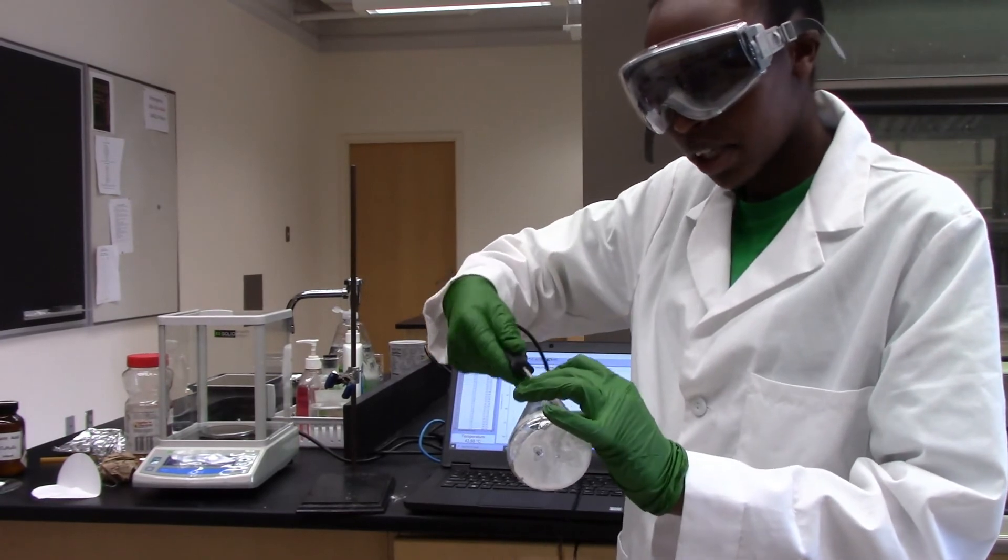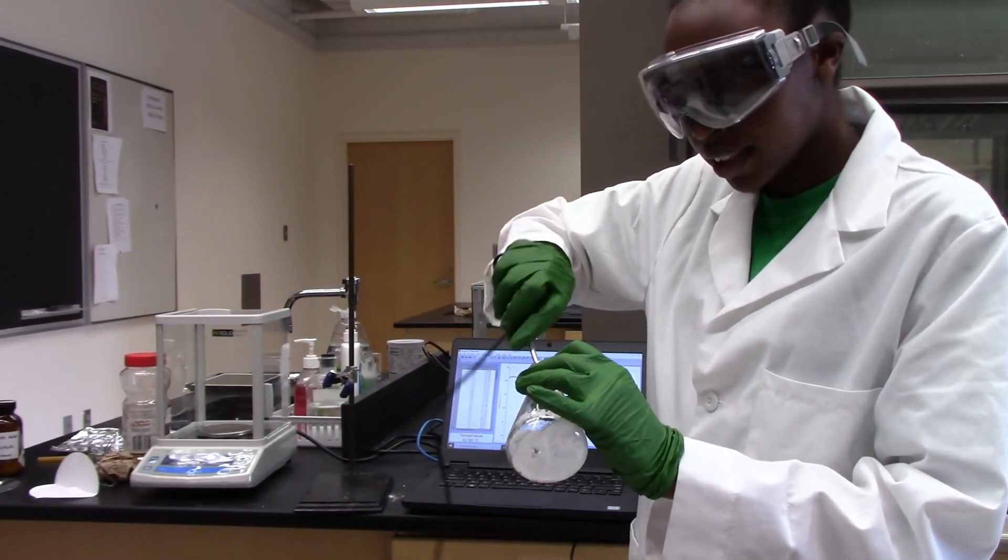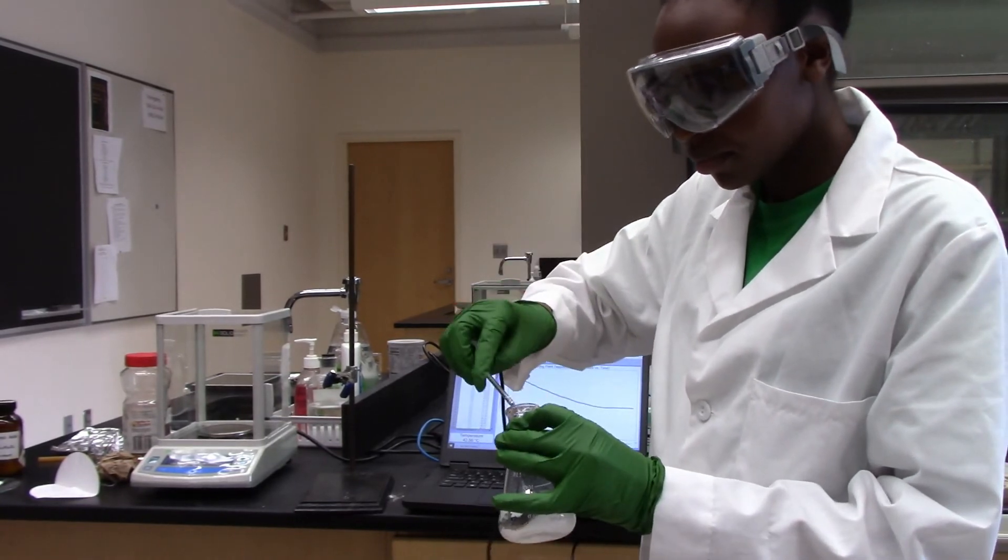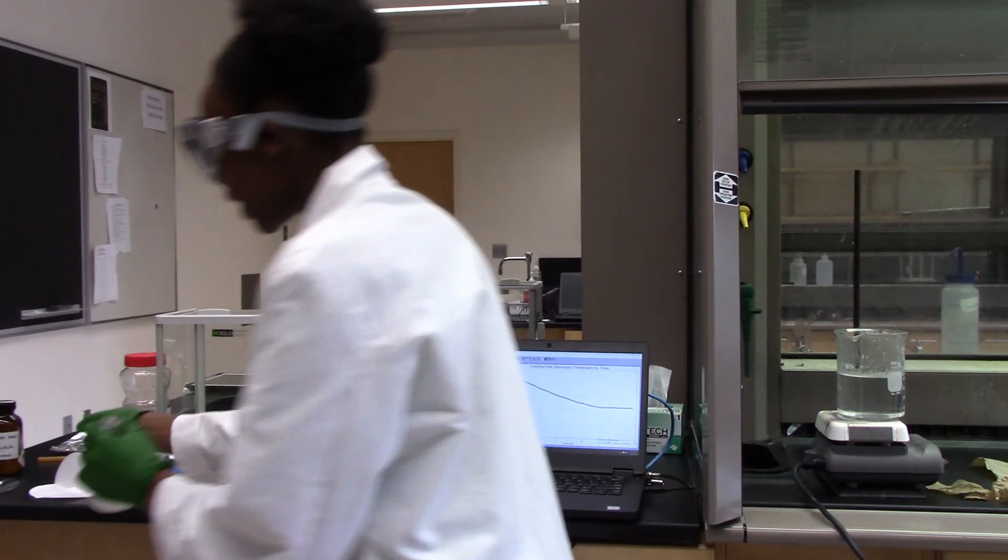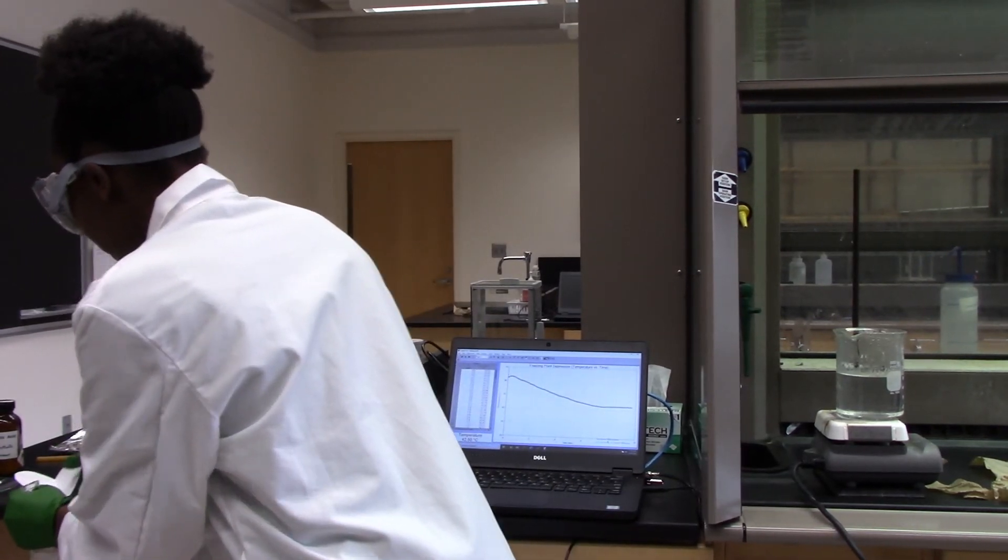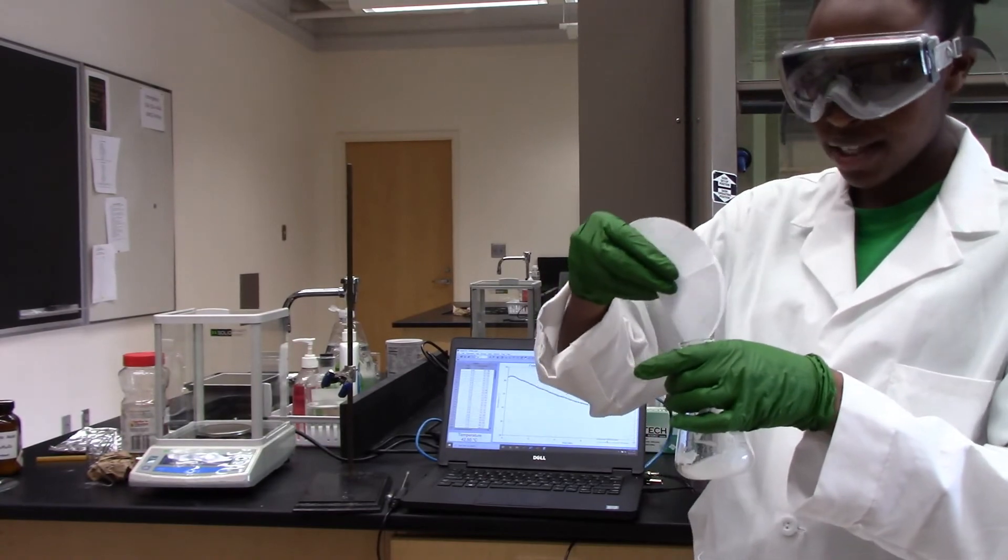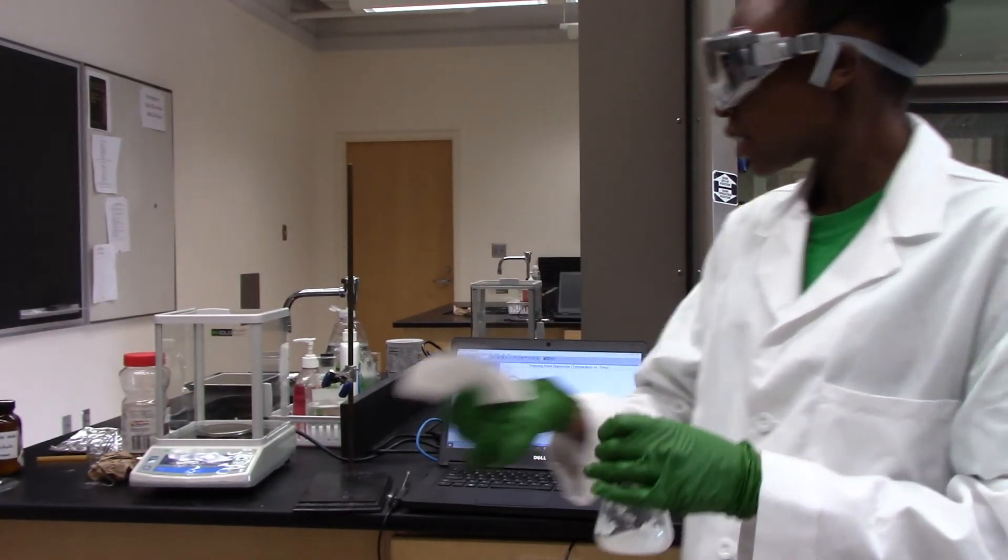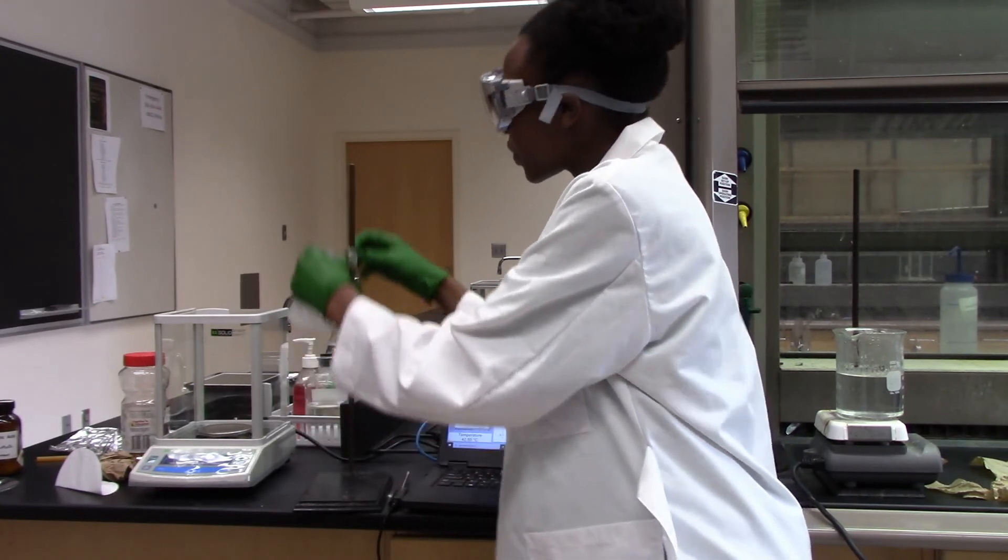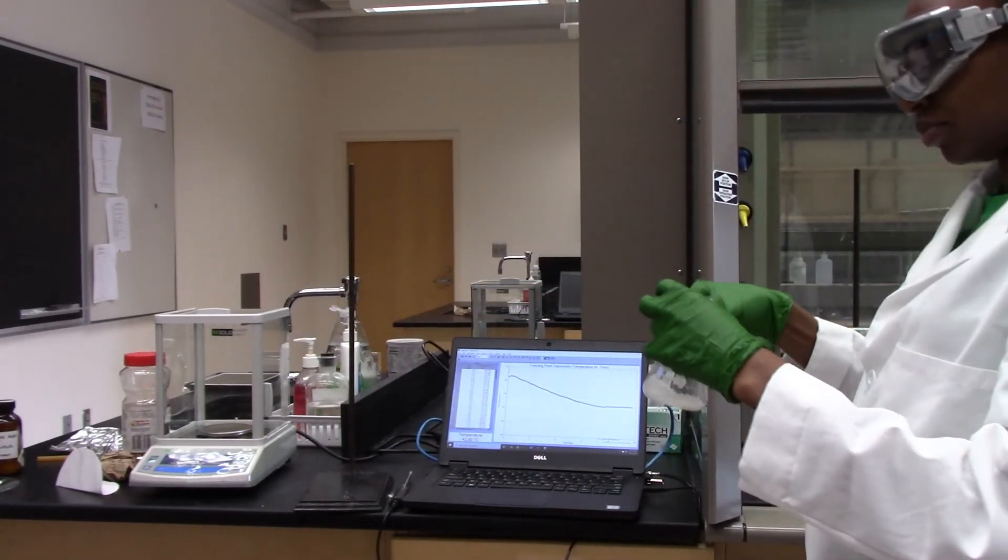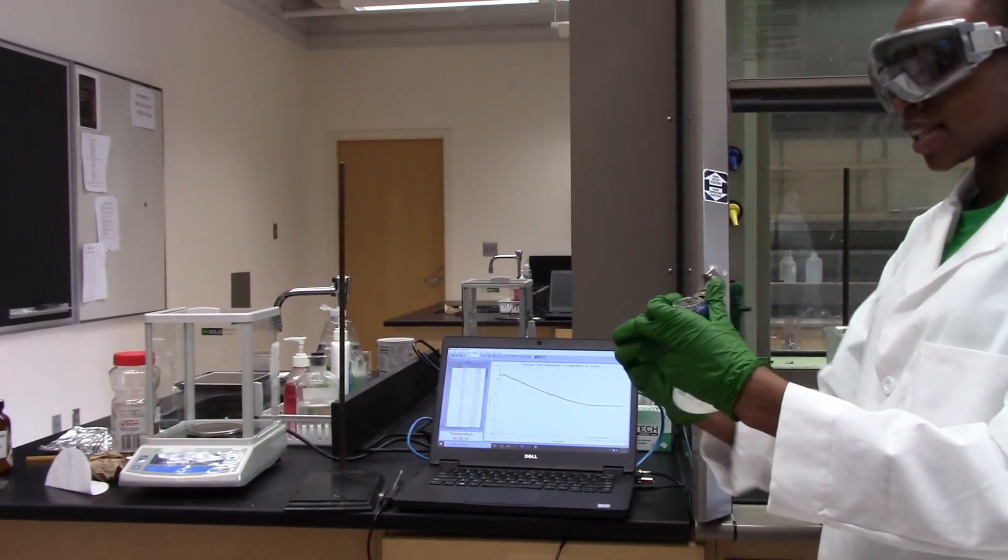Okay, first I'll make sure that my temperature probe doesn't have any lauric acid on it. And I will take my unknown number one, and I'll just put it in the flask, and again, I'll put this in my water bath and warm it up until it's a liquid.